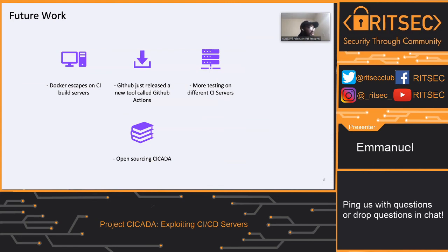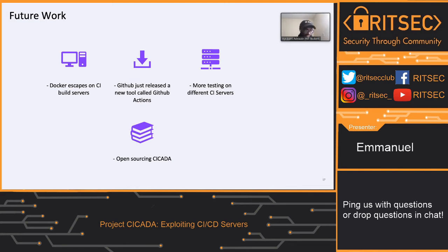What do I want to do going forward? I want to do more with Docker and see how a Docker escape could be possible. Also, GitHub recently released GitHub Actions, which is exactly like a CI server but more automated. I haven't tested it yet but it looks really interesting, so I want to dig more into that. Right now my tool only works for Travis, so I'm going to expand it to Jenkins, Drone, and pretty much all CI services out there. And Cicada is already open source, so you can go check that out.